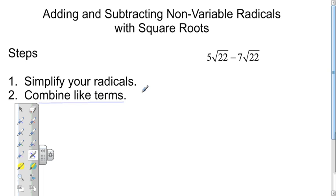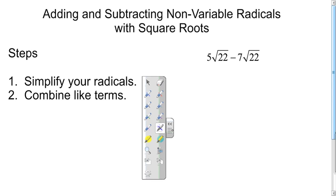It's not always the case that you will have to simplify your radicals because sometimes you will get expressions where the radicals are already simplified. So let's take a look at this example where it says 5 root 22 minus 7 root 22, and we'll notice here if we're going to try to simplify our radicals, we see the square root of 22.